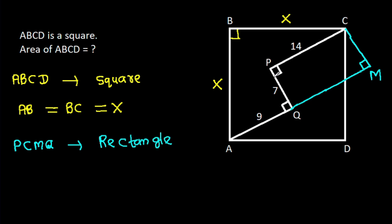And PC is 14, so QM will also be 14, and PQ is 7, so CM will also be 7.